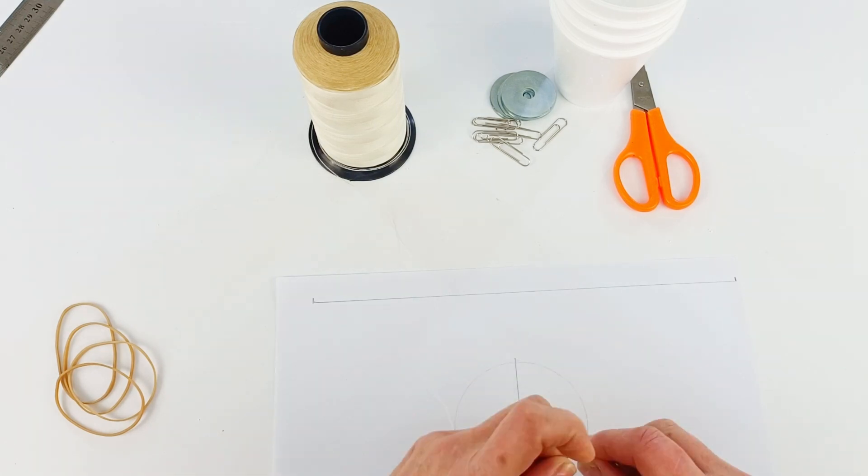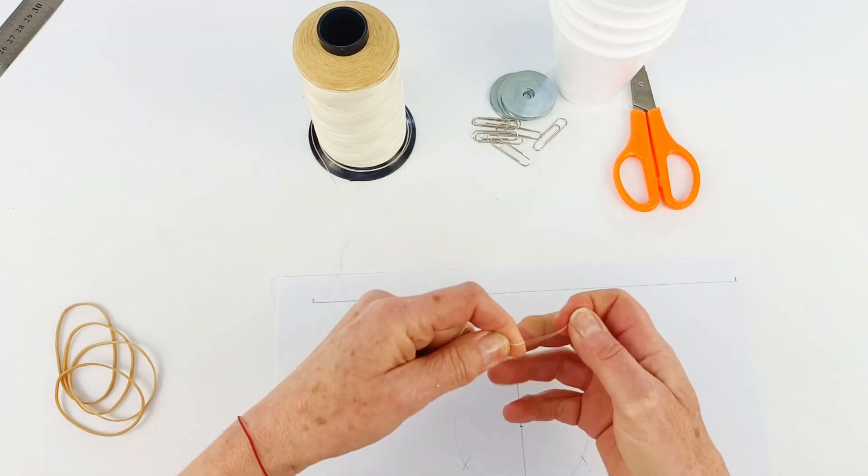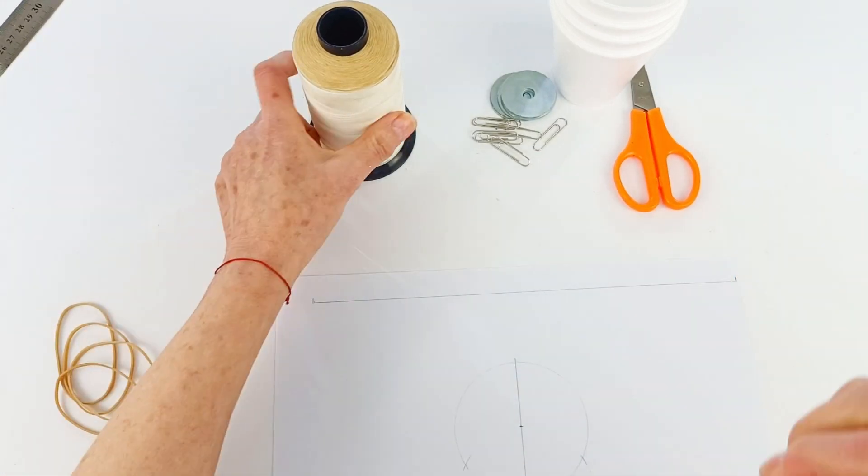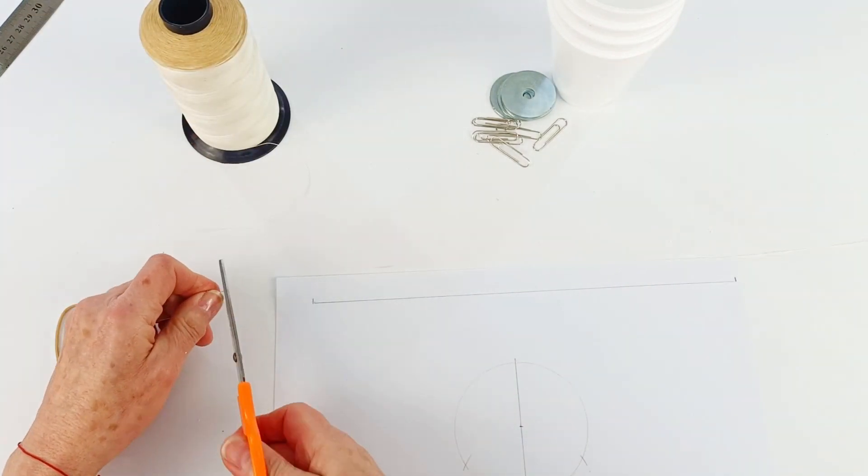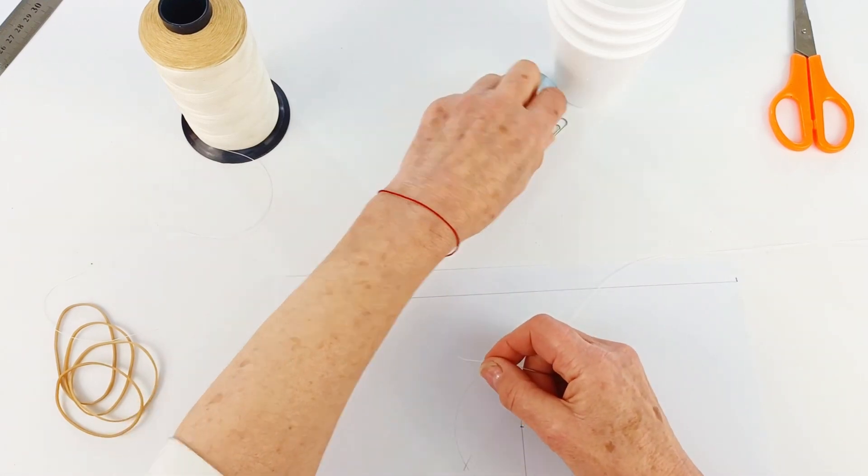So we've made a 27 centimeter long line on a piece of paper here and we're just going to tie a paper clip to one end of our string and then we're going to make it a little longer than our 27 centimeters so that we've got room to tie the other end to another paper clip.